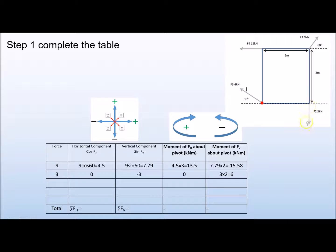Force 2 is nice and easy — it's a vertical force going down, so there is no horizontal component, but the vertical is −3 kN from our sign convention. Because it acts vertically, there is no horizontal moment. The vertical moment is 3 kN × 2 m = 6 kNm, positive because it pulls clockwise.